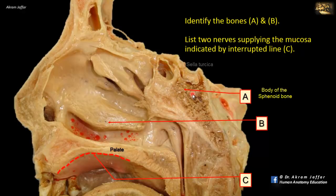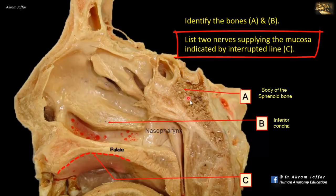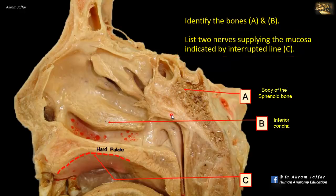A is the sphenoid bone. You can see here part of the sphenoid air sinus. This is the sella turcica containing the pituitary gland. A is the body of the sphenoid, and as you can see, it is located in the roof of the nasopharynx.